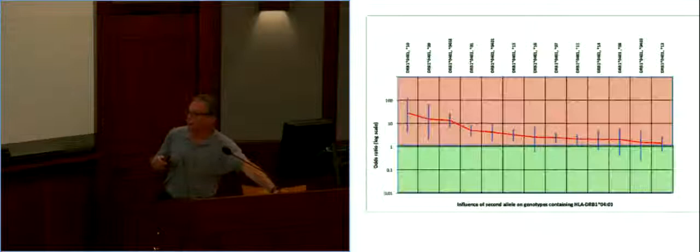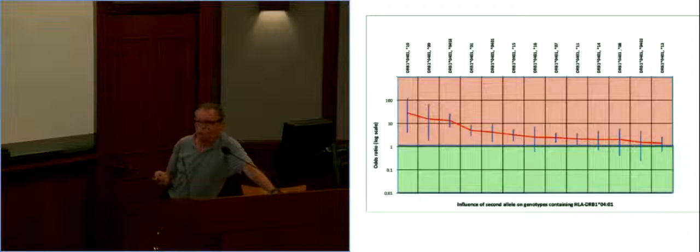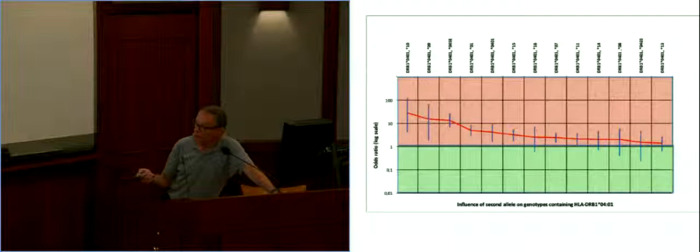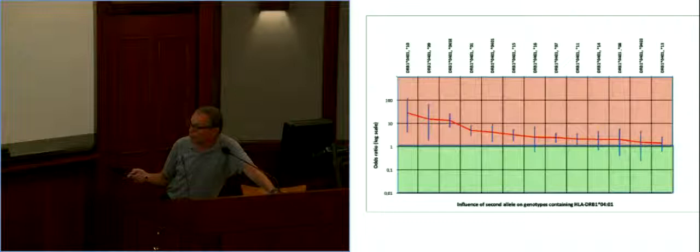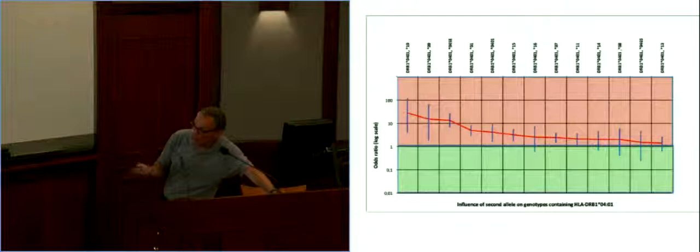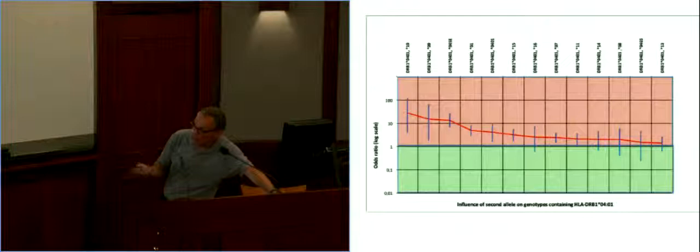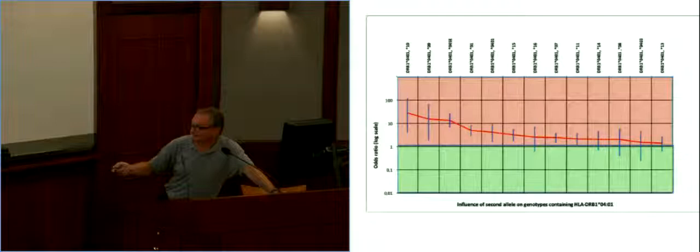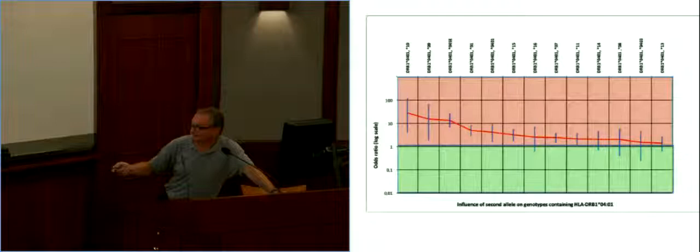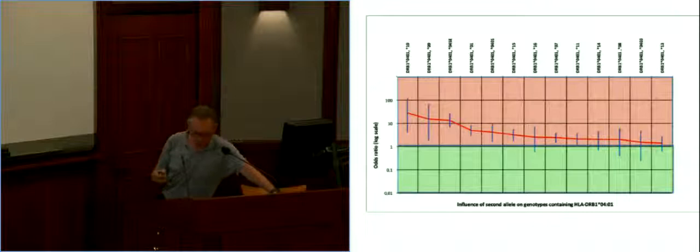Now, if one wants to see whether there is some protection, one can study genotypes containing one particular allele. This we did for DR4-01, which is the common RA-associated DR4 subtype. And what you see is that the risk or the odds ratio associated with genotype drops from, this must be around 30 down to 1 point something, according to the second allele in the genotype. However, first, it doesn't reach real protection. We are still above one. And second, for some of these genotypes, the standard deviation is very large, so that even if we have the impression that the risk is going down with the second allele, it's not absolutely certain that there is actual protection.